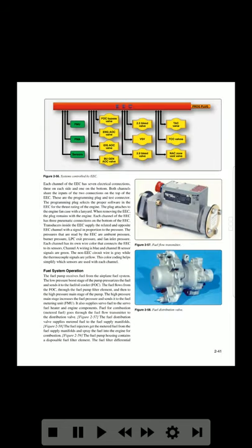The EEC also controls several other subsystems of the engine through torque motors and solenoids, such as fuel and air oil coolers, bleed valves, variable stator vanes, turbine cooling air valves, and the turbine case cooling system. Each channel of the EEC has seven electrical connections — three on each side and one on the bottom. Both channels share the inputs of the two connections on top of the EEC: the programming plug and test connector. The programming plug selects the proper software in the EEC for the thrust rating of the engine.